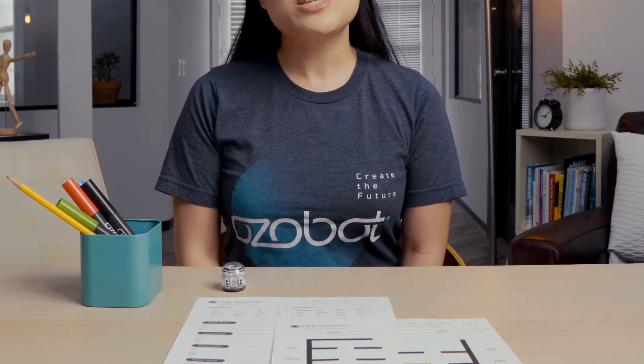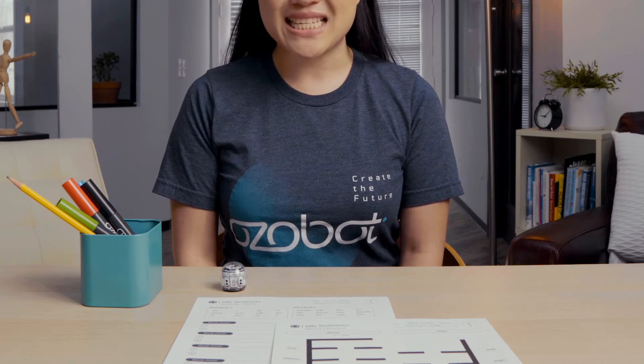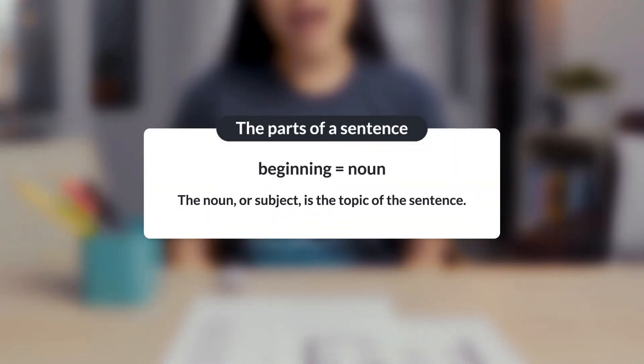First, let's quickly review the parts of a sentence. The beginning of a sentence is usually a noun, a person, a place, or a thing that we call the subject of a sentence. This means that the noun or the subject is the topic of the sentence.